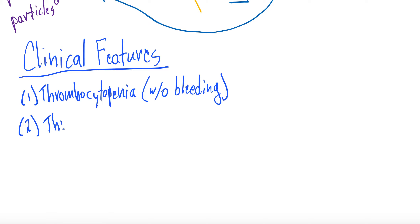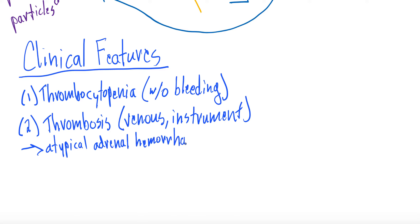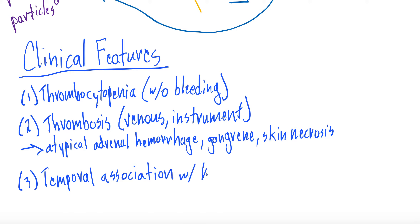The second clinical feature is thrombosis, which is typically venous and typically at sites of instrumentation. Atypical manifestations can include adrenal hemorrhage, gangrene, and skin necrosis, but these are less common. The third clinical feature is a temporal association with heparin — since heparin complexes with platelet factor 4 to cause the immunogenic antibody response, there must be a temporal association with heparin use.